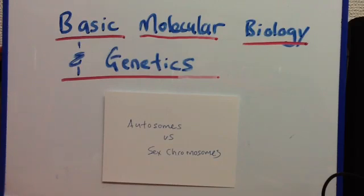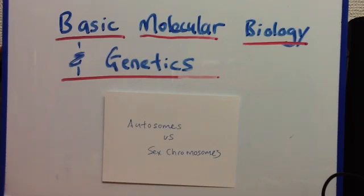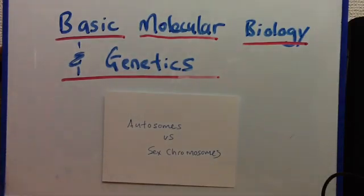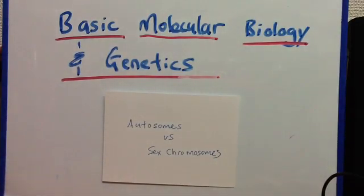An interesting aside is the story about Henry VIII, who always blamed his wives for not being able to have sons, when in reality he was to blame because he was the one who would be giving the Y. If he didn't give the Y — if one of his sperm was not carrying a Y — then it would not become a male.